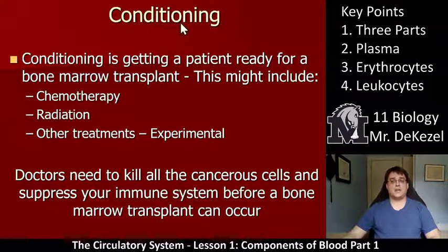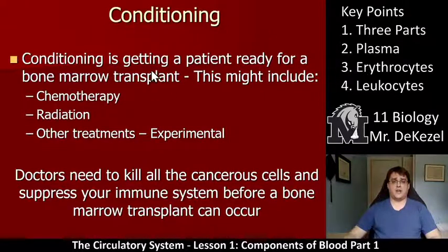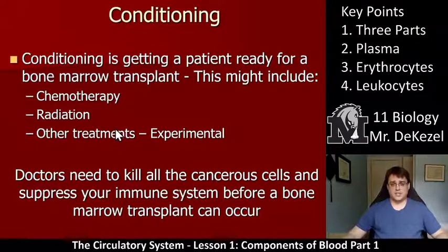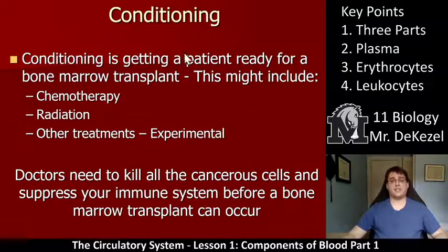When someone has leukemia, that is a cancer of the blood. Often they need a bone marrow transplant because the bone marrow is producing faulty blood cells. To prepare for the transplant, they need to undergo conditioning — this might include chemotherapy, radiation, and other treatments. The whole idea is to kill the immune system and take it down so that you can essentially implant a new immune system and a new red blood cell factory into the patient.